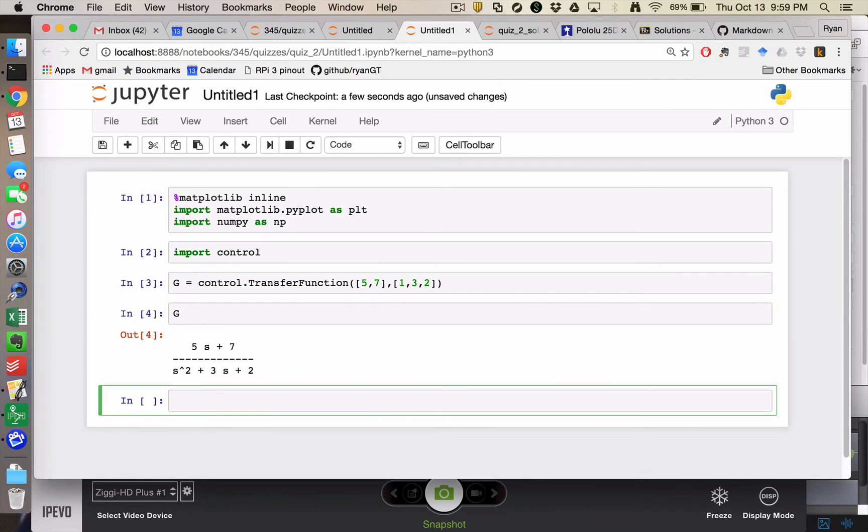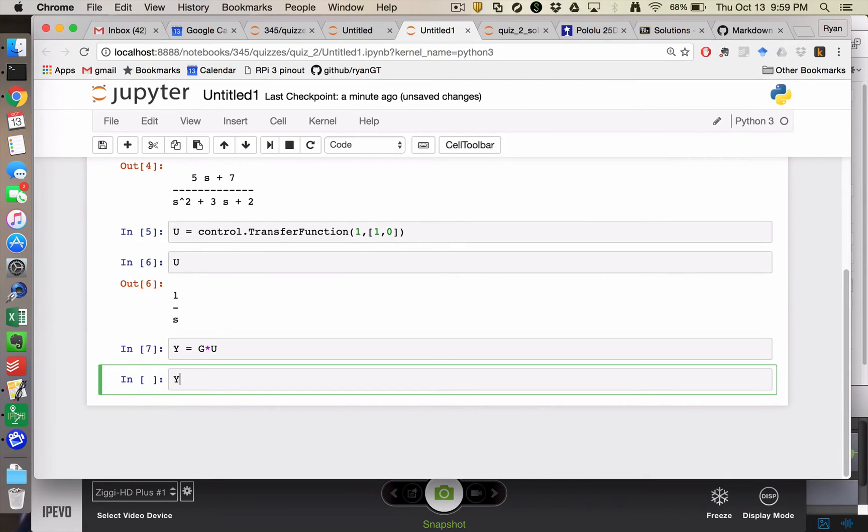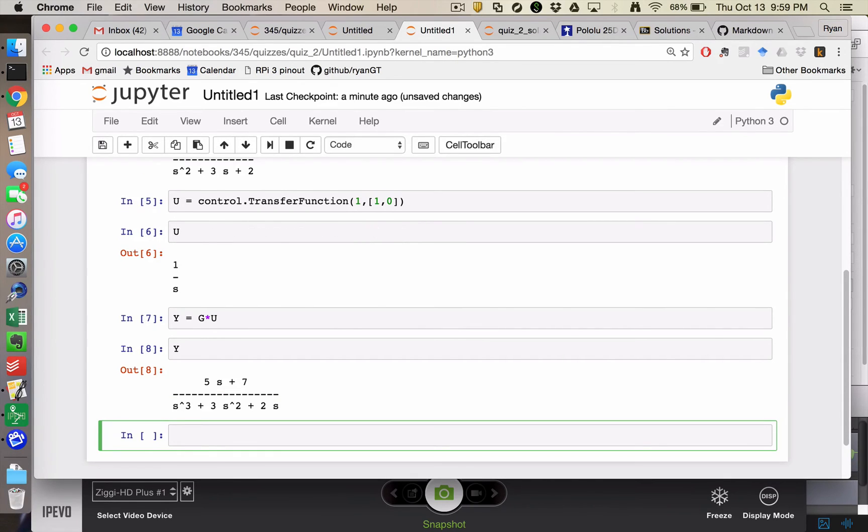So there's my transfer function and then my input I'm creating as a transfer function as well. Again, using that term slightly loosely. u is 1 over s. And so my output is my transfer function times my input like so. 5s plus 7 over s cubed plus 3s squared plus 2s.